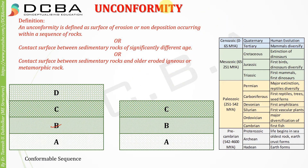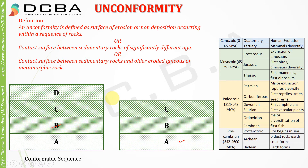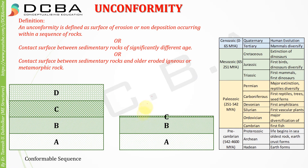So how is this related to unconformity? The deposition may have stopped from one era to another. Let's say deposition started in the Precambrian era and layers A, B, C all formed then. Because of environmental changes between eras — Precambrian, Paleozoic, Mesozoic, and Cenozoic — deposition stopped. The last deposited surface was then exposed to the environment and got eroded.